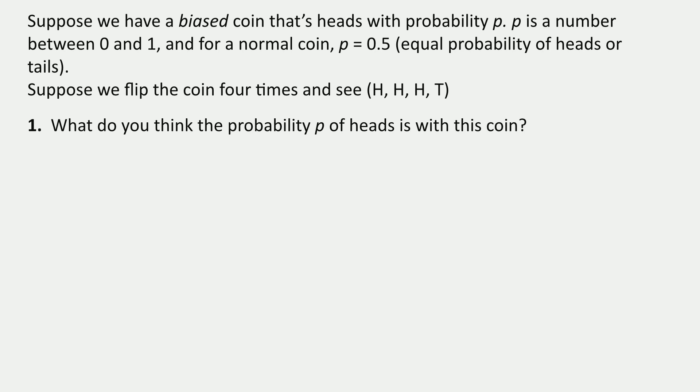Suppose we have a biased coin that's heads with probability P. P is a number between 0 and 1. So for a normal coin, we would say P equals 0.5. But if P is not 0.5, maybe the coin is weighted in some way. Maybe it comes up heads with 80% of the time. And suppose we flip the coin four times and we see heads, heads, heads, tails. I want you to try to guess what is the probability of heads with this coin. This is a little bit of a tricky question, but I'm going to let you pause and think about this.